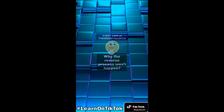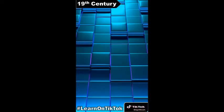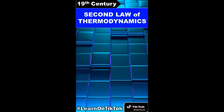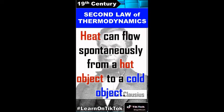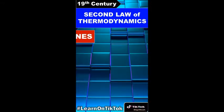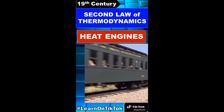Scientists in the 19th century formulated a new principle known as the second law of thermodynamics. This law tells which processes occur in nature and which do not. As an introduction, according to Clausius, the second law states that heat can flow spontaneously from a hot object to a cold object.